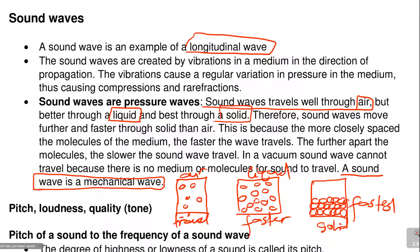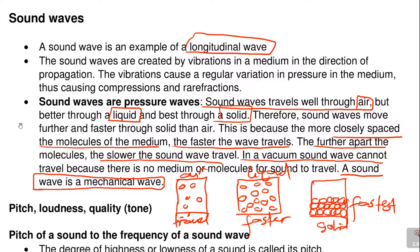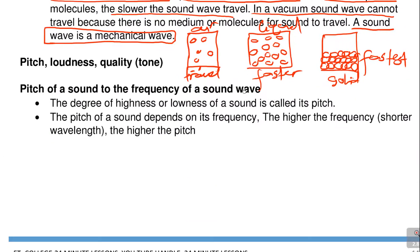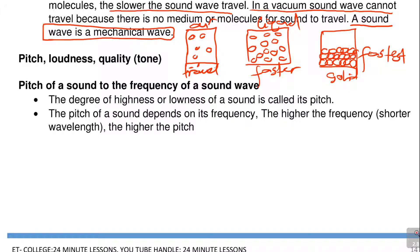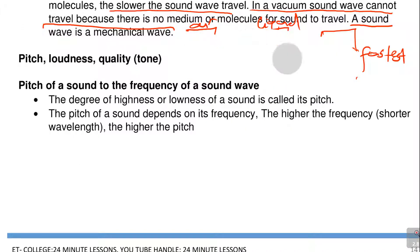The more closely spaced the molecules in the medium, the faster the wave travels. The further apart the molecules, the slower the sound wave travels. This also explains why in a vacuum, sound cannot travel — because a vacuum is an empty space, so there is no medium to allow sound to travel through.